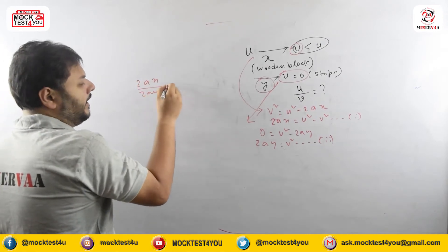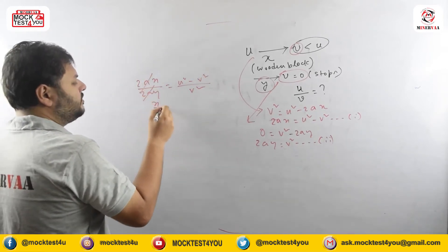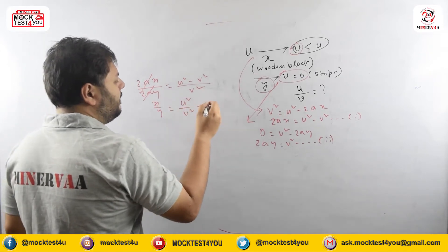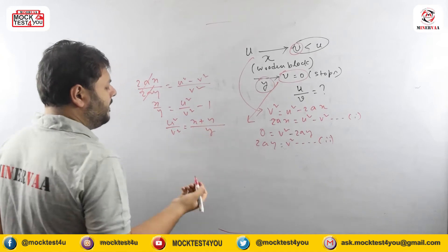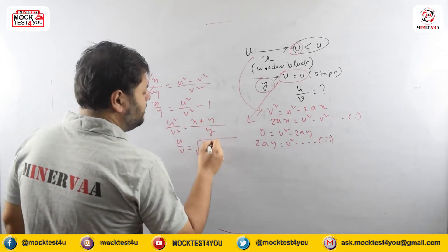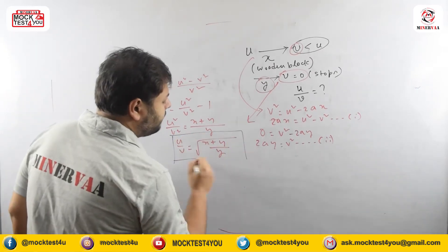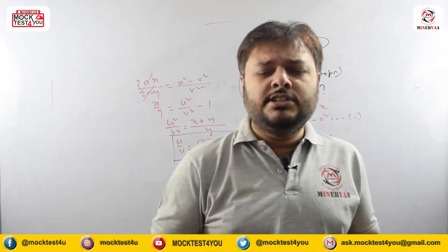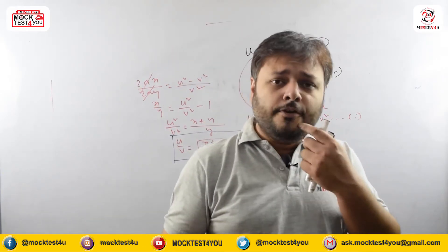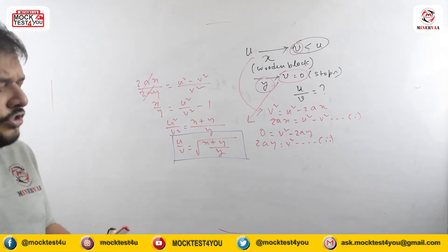Dividing equation (1) by equation (2): x/y = (u² − v²)/v². So u²/v² = (x + y)/y, giving u/v = √((x + y)/y). This is the answer for the ratio of initial to final velocity of the bullet.